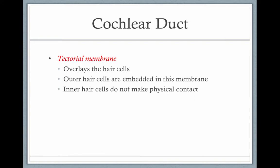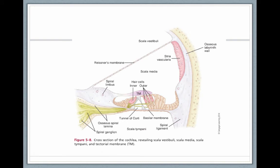The tectorial membrane overlays these hair cells. The outer hair cells are embedded in this membrane, and the inner hair cells do not make contact with the tectorial membrane. We have the scala vestibuli on top and the scala tympani on bottom; they share the same fluid. The middle is the scala media, which has a different fluid. There are three rows of outer hair cells and one row of inner hair cells, overlaid by the tectorial membrane, with tips of the outer hair cells embedded in it — all sitting on the basilar membrane. The inner hair cells receive afferent innervation, sending messages up to the brain, and the outer hair cells have efferent nerve innervation, sending inhibitory messages back down.